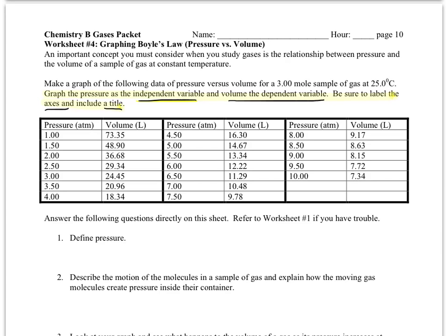So here, if you take a look at the data first, our pressure values are pretty straightforward to graph, right? 1, 1.5, 2, 2.5, all so on and so forth, into the next column we have 4.5 and 5, into the next column 8, 8.5, all the way up through 10. Not really difficult to graph.